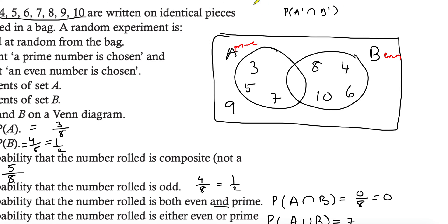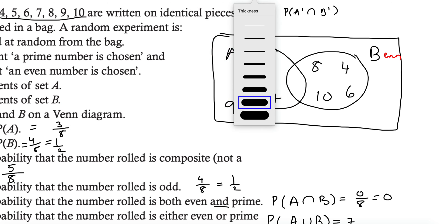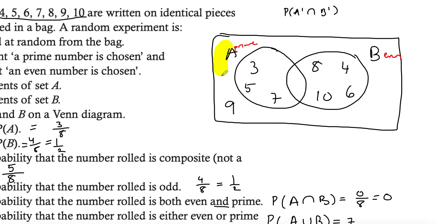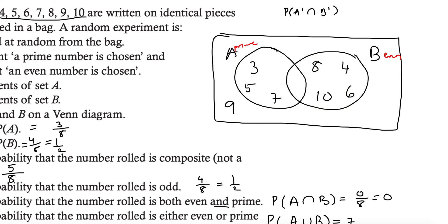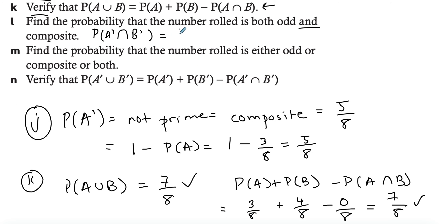Using shading: I highlight A prime — everything outside A — and then highlight B prime — everything outside B. Where I've shaded twice is precisely only the outside region containing nine. Since we're looking at the intersection, there is only one element there. The answer is one over eight. You can verify logically — the only odd number that is not prime is nine.